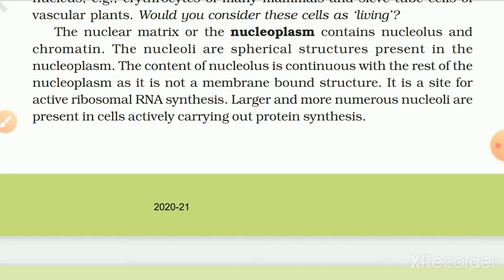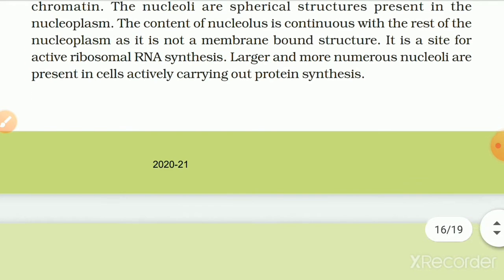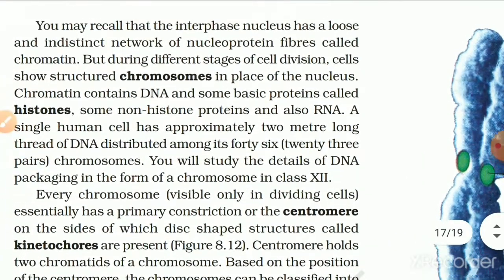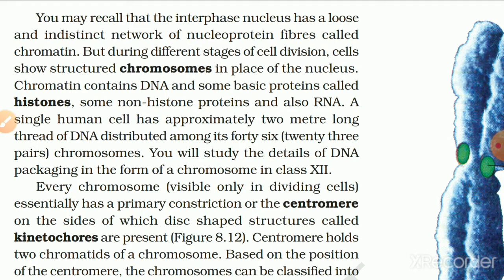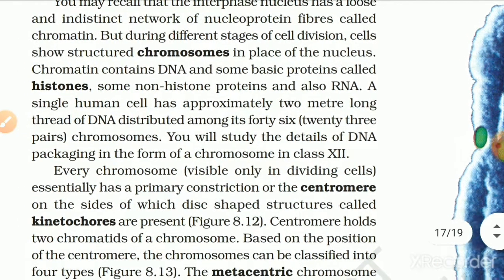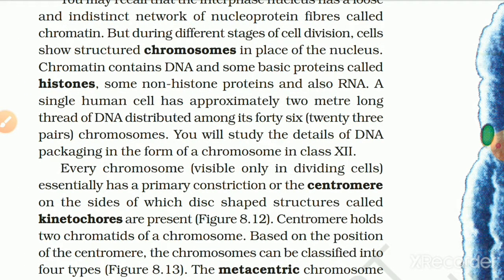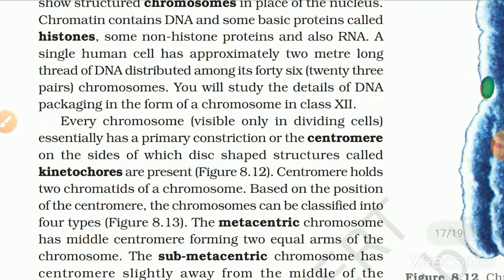The nuclear matrix or nucleoplasm contains the nucleolus and chromatin. The nucleolus is a spherical structure present in the nucleoplasm; it is not a membrane-bound structure and its content is continuous with the rest of the nucleoplasm. It is a site for active ribosomal RNA synthesis. Larger and more numerous nucleoli are present in cells actively carrying out protein synthesis. The interphase nucleus has a loose and indistinct network of nucleoprotein fibers called chromatin, but during cell division, cells show structured chromosomes. Chromatin contains DNA, basic proteins called histones, some non-histone proteins, and also RNA. A single human cell has approximately 2 meters of DNA distributed among its 46 (23 pairs) chromosomes.